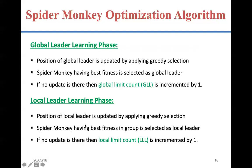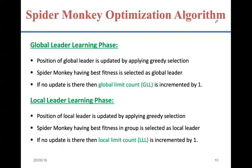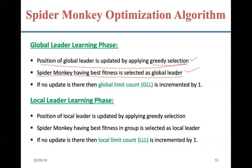The next phase after the global leader phase is the Global Leader Learning phase, or GLL phase. In this GLL phase, the global leader applies greedy selection: if the global leader is updated and becomes better, the new value is accepted; otherwise it is rejected. This means if the global leader's position improves, it is updated; otherwise the old position is carried over. Then the spider monkey having the best fitness is selected as the new global leader.